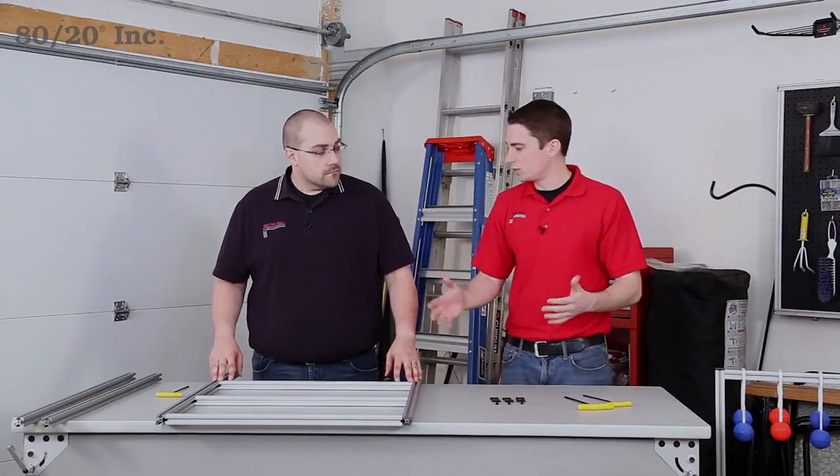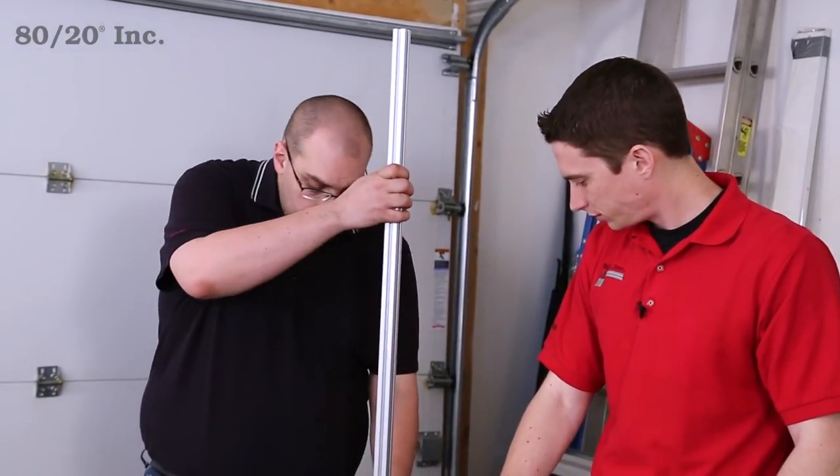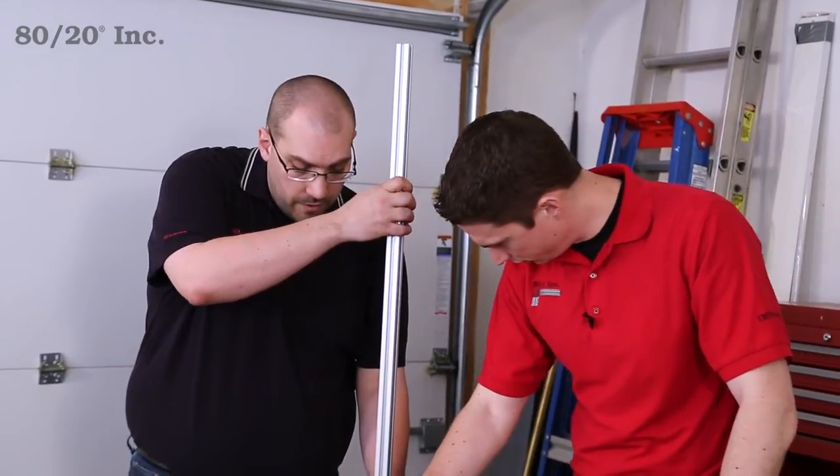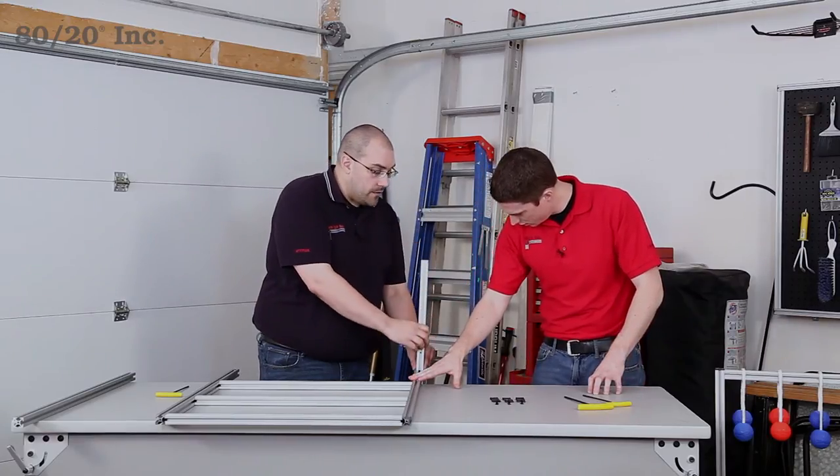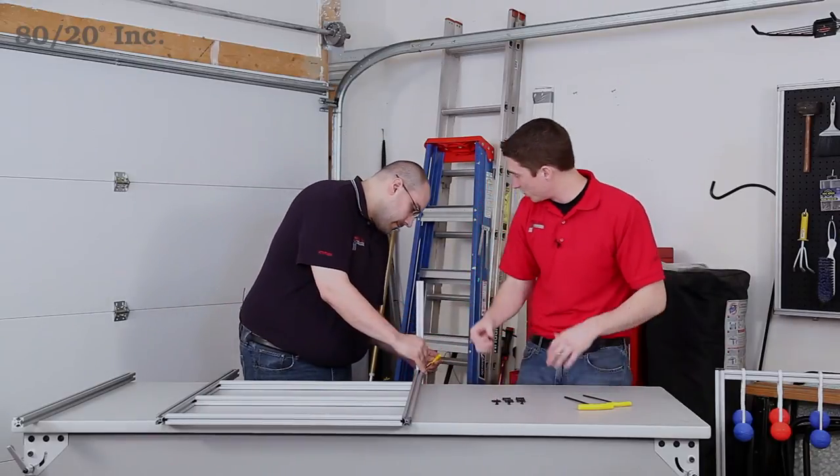I have the cross bars all done and tightened down and now we're ready to proceed. That went pretty smoothly. Now that we got the frame done, we just need to put our feet on. I'm going to take the feet, slide them over the end fastener here, and then tighten everything down and we'll be ready to go. Once you have that done, we'll finish up with some end caps and then we'll be ready to put our project to use.